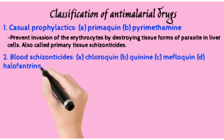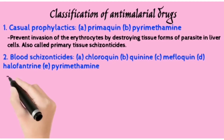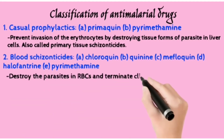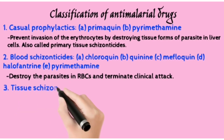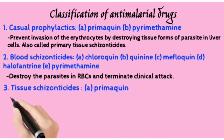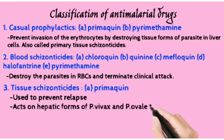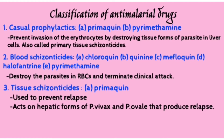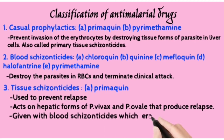Blood schizonticides include chloroquine, quinine, mefloquine, halofantrine, and pyrimethamine. These are suppressives — they destroy the parasites in RBCs and terminate the clinical attack. Then we have tissue schizonticides used to prevent relapse. Under this comes Primaquine, which acts on the hepatic forms of Plasmodium vivax and Plasmodium ovale, which produce the relapse. Blood schizonticides bring radical cure and eradicate the parasite from the body.